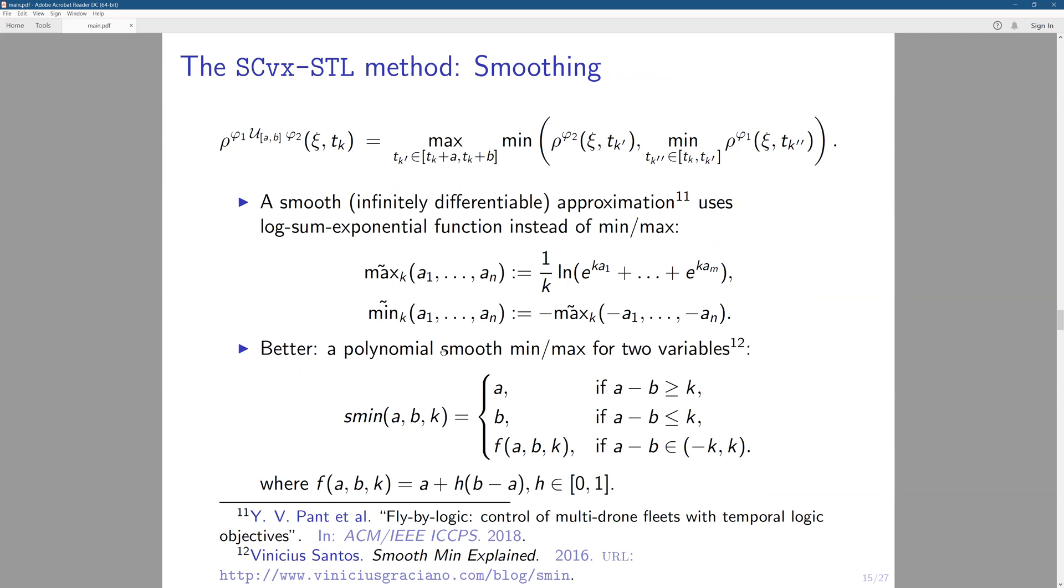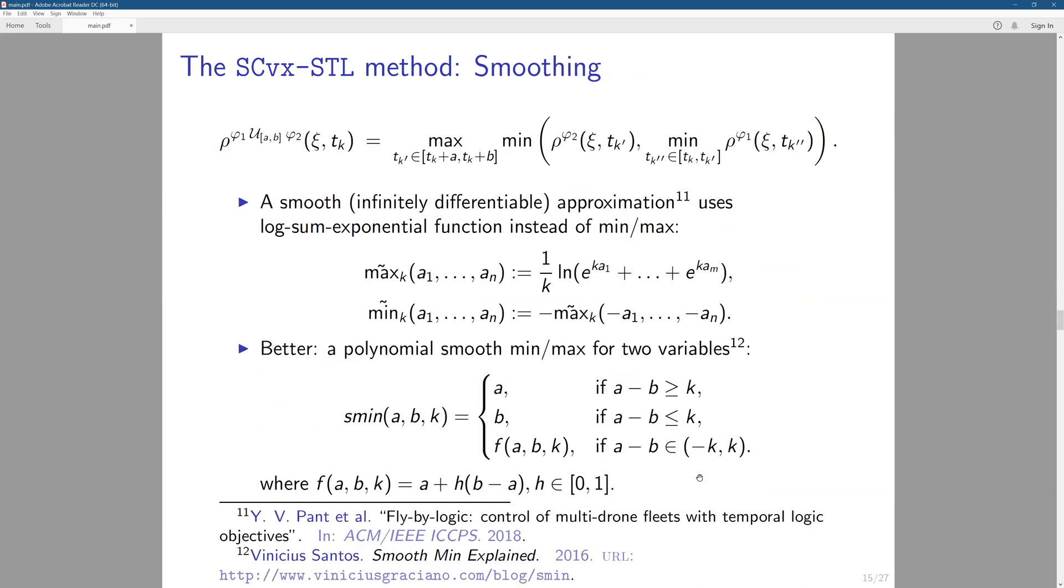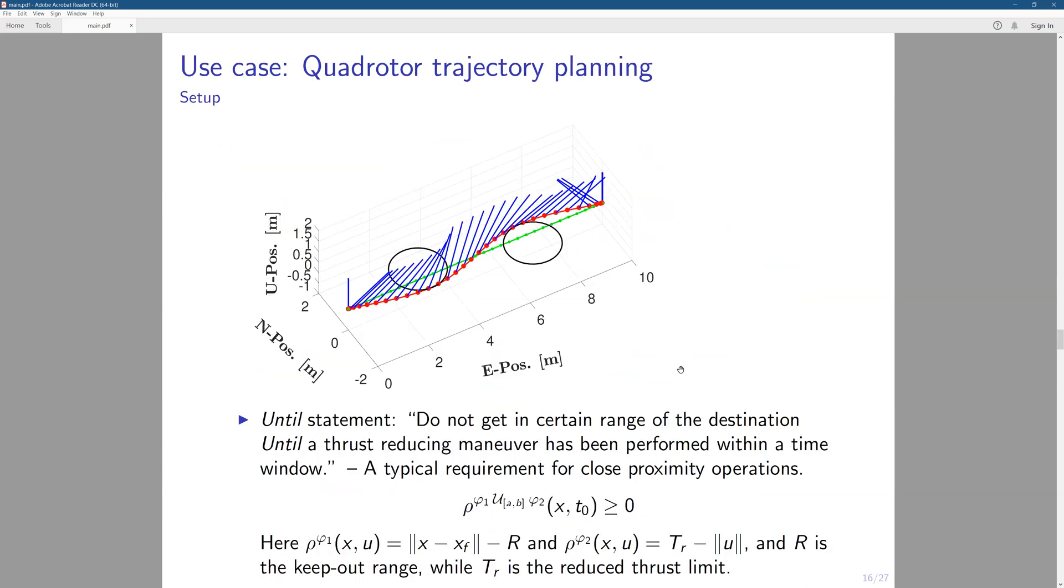And then we can just apply this polynomial smoothing technique from computer graphics source. It had a way to do the smoothing for just the two variables. You can see that we only have two variables at a time.